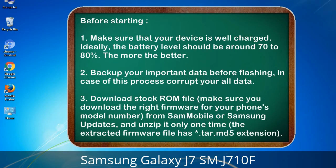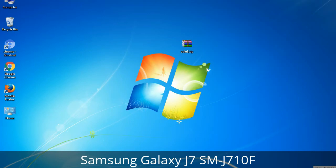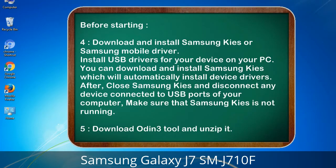3. Download the stock ROM file. Make sure you download the right firmware for your phone's model number, from Sammobile or Samsung Updates, and unzip it only one time. The extracted firmware file has a *.tar.md5 extension. 4. Download and install Samsung KIES or Samsung mobile driver to install USB drivers for your device on your PC. Samsung KIES will automatically install device drivers. After that, close Samsung KIES and disconnect any device connected to USB ports of your computer. Make sure Samsung KIES is not running.